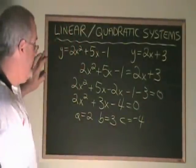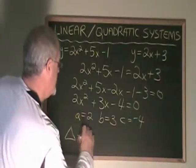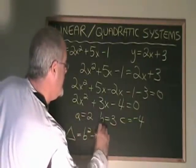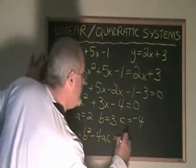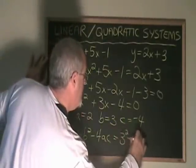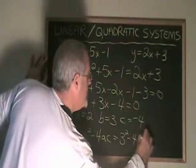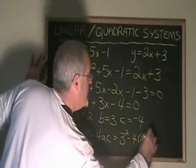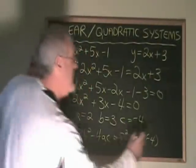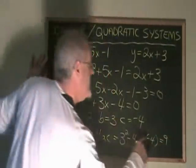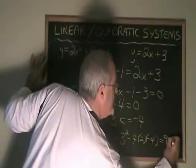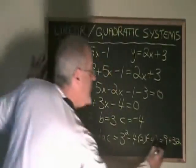Our a is 2, our b is 3, and our c is negative 4. Let's find delta. Delta equals b squared minus 4ac, which in this case is 3 squared minus 4 times 2 times negative 4, which is equal to 9 plus 32, which is equal to 41.